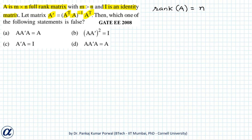Note that when A is a full rank matrix, A transpose A is invertible. A transpose A is of size n by n, because A is an m by n matrix, so A transpose is an n by m matrix, and their product gives an n by n matrix. So A transpose A is a square matrix of size n and it is also invertible because A is a full rank matrix.